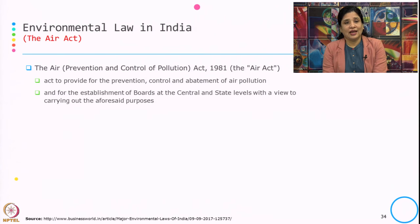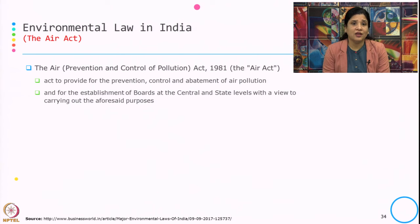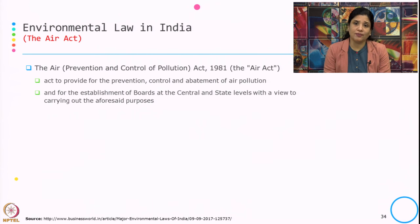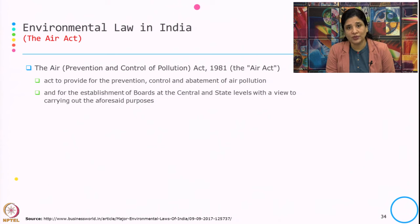Then we have the Air Act. Possibly the two acts everybody knows about the environment are the Air Act and the Water Act. The Air Act refers to the Air Prevention and Control of Pollution Act 1981. It is enacted to provide prevention, control and abatement of air pollution and for the establishment of boards at the central and state level to carry out these objectives.